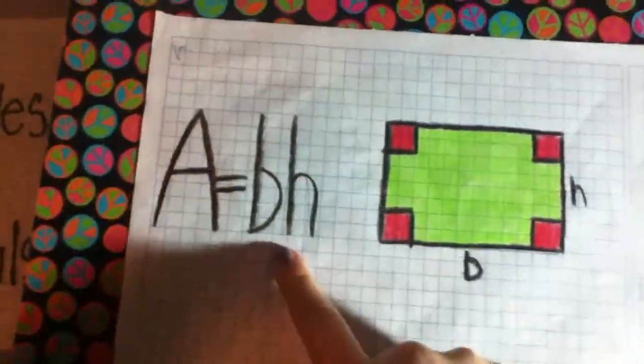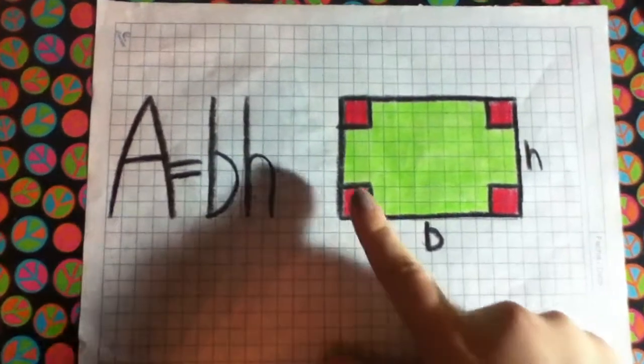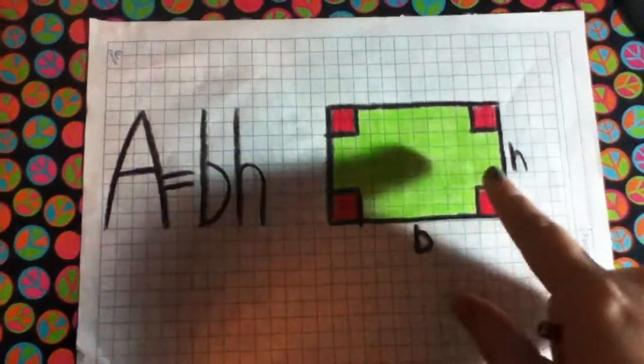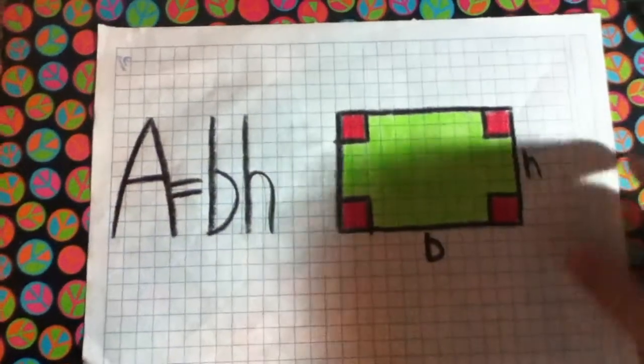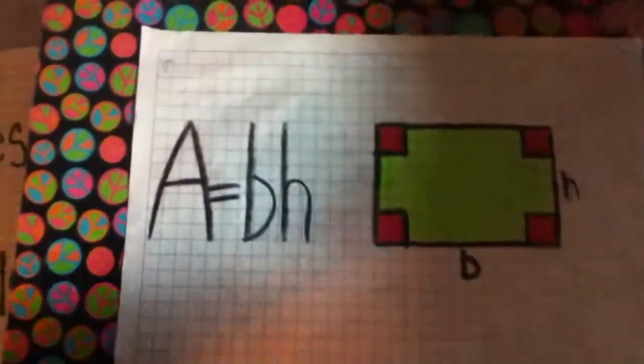This is the formula for the area. We have four right angles and two pairs of congruent sides. So let's start with some exercises.